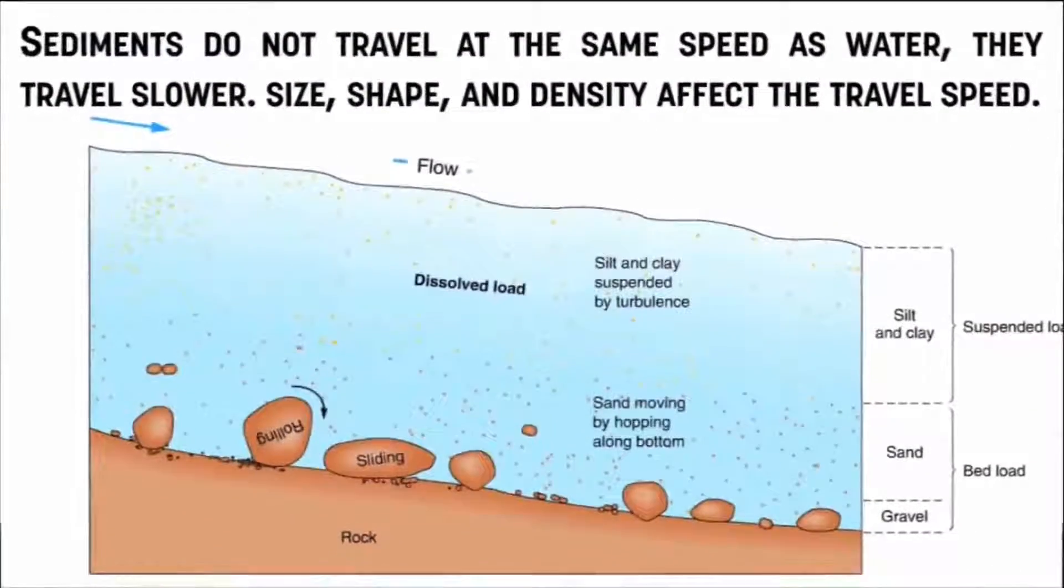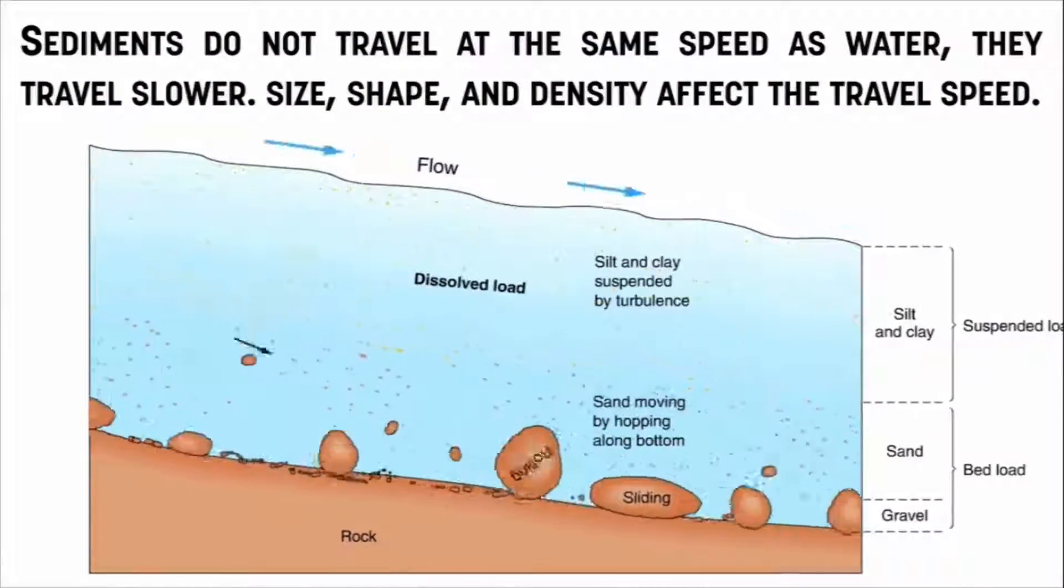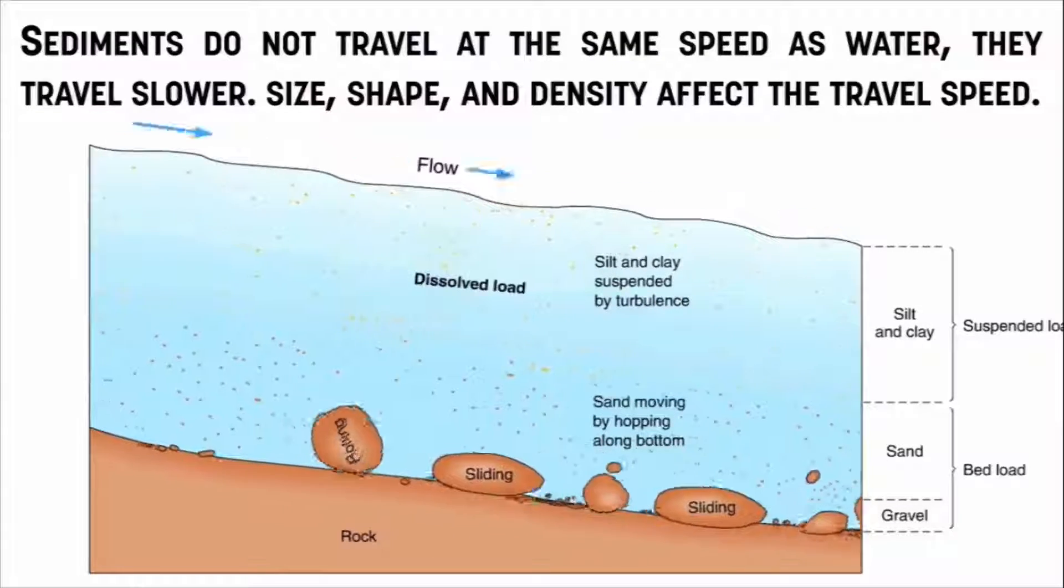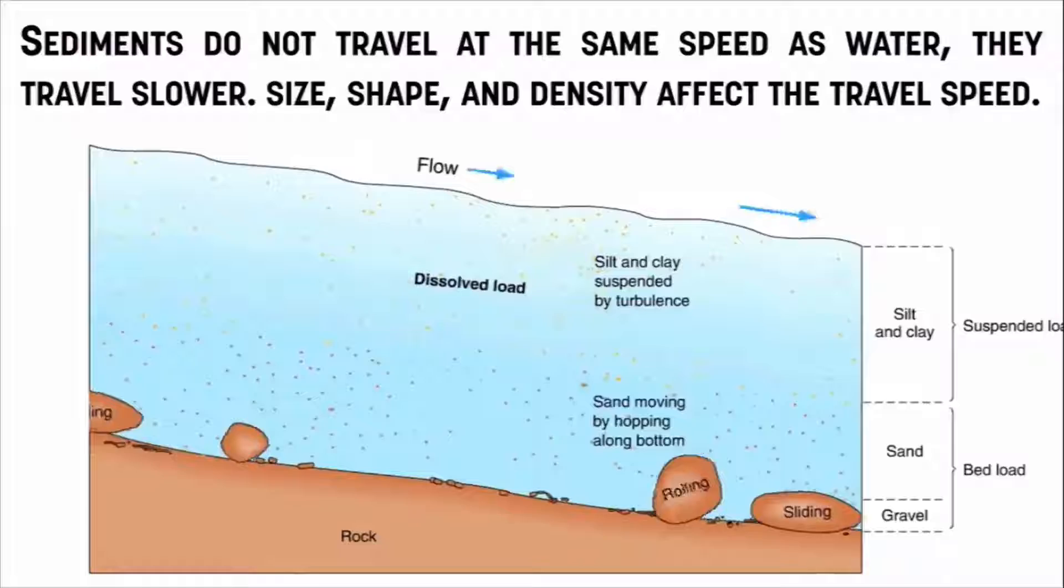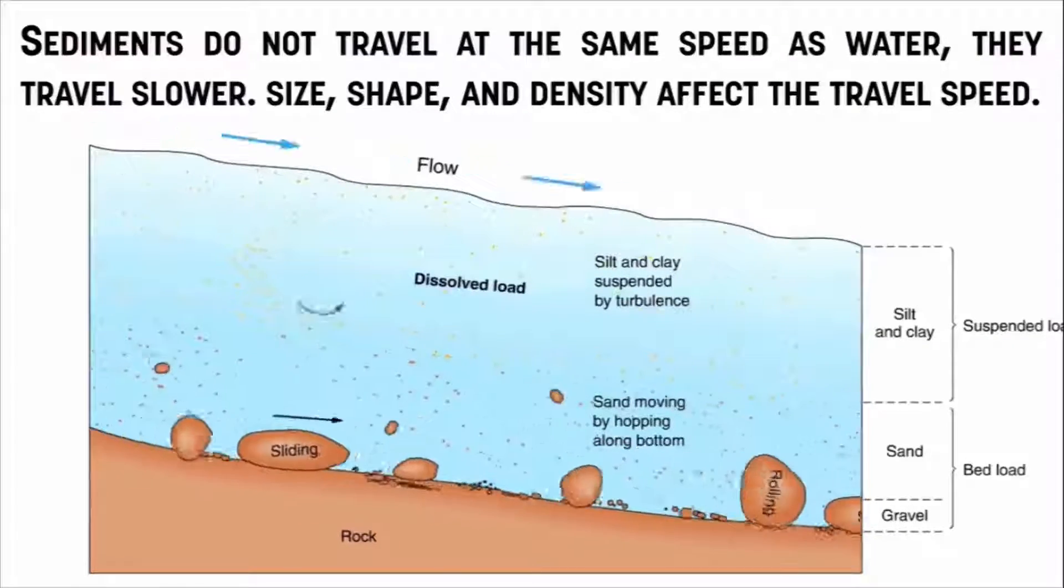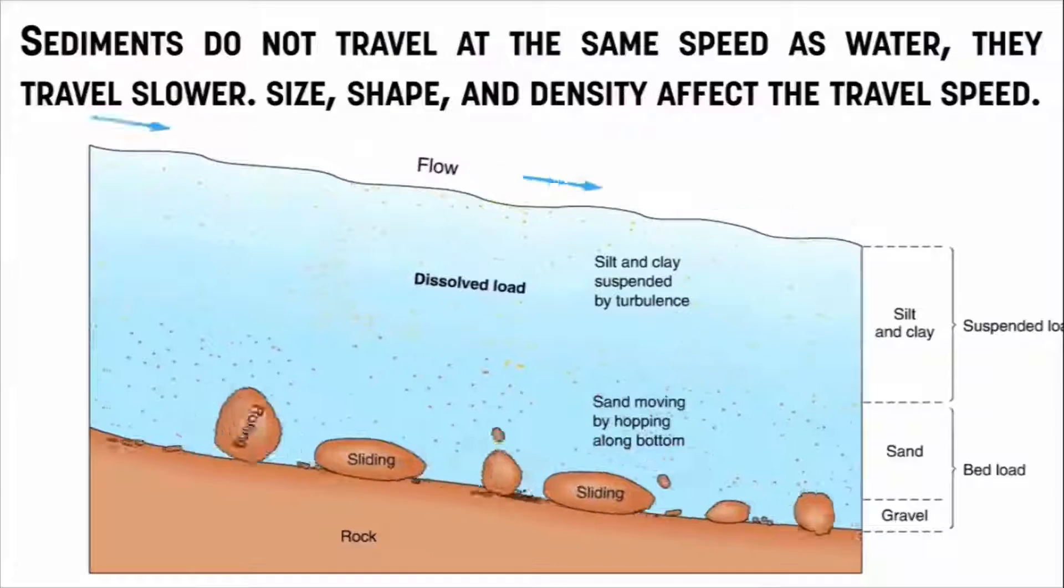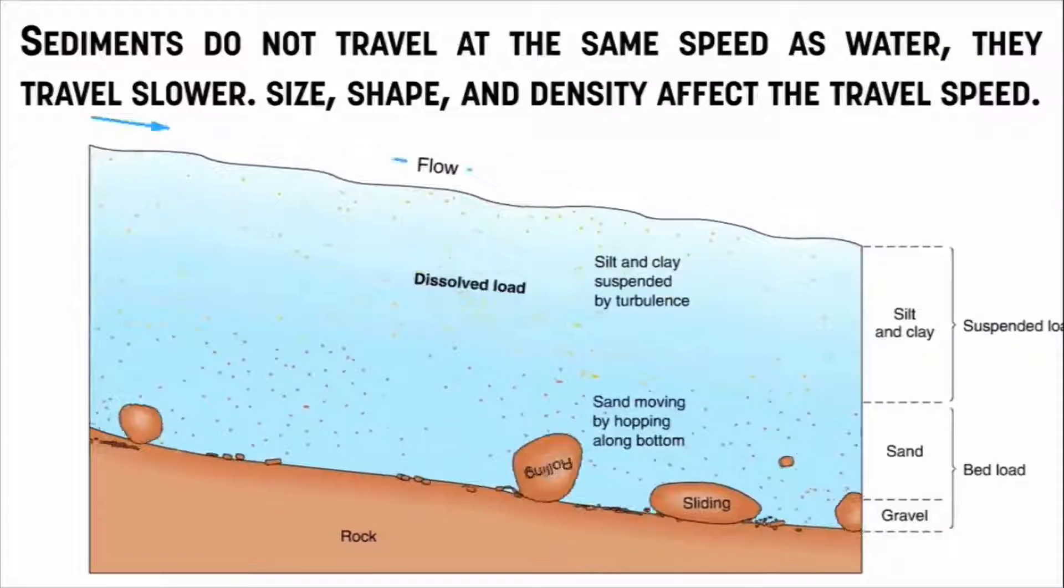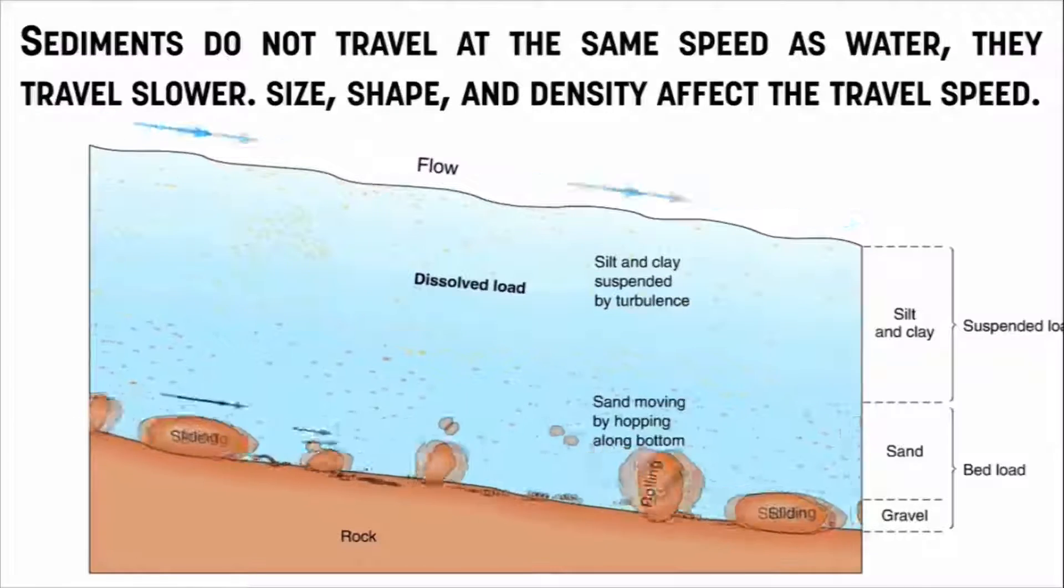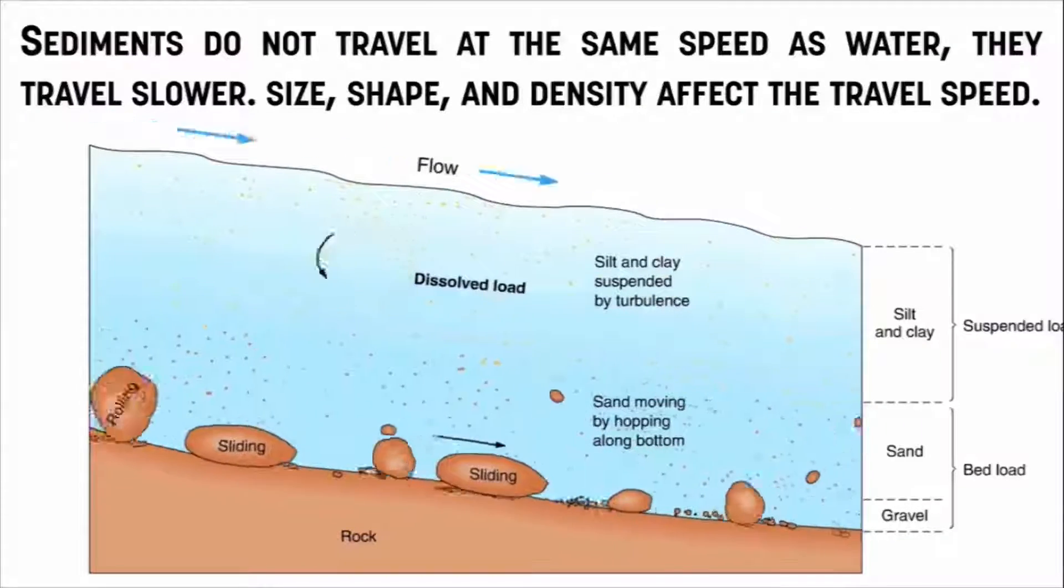Now the sediments that are being carried are not traveling at the same speed as the water. They're actually traveling slower, and there's a lot of different ways that they're traveling. You can see it in this animation. Some are rolling, some are sliding, some are dissolved and suspended in the flow of water, but none of them are traveling at the same speed. That really will affect how they get deposited.